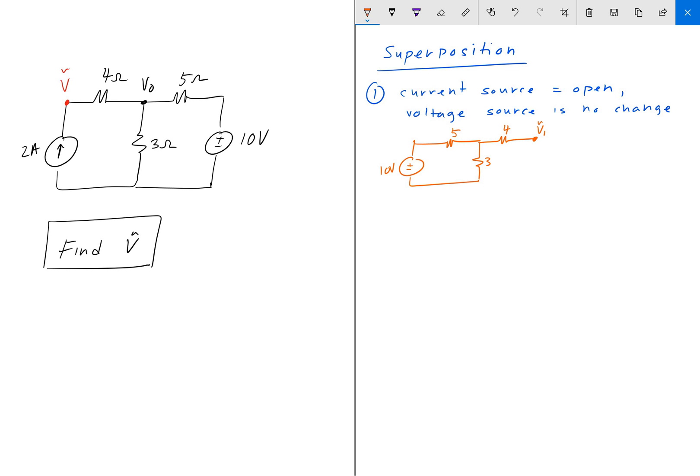And because there is nothing connected to the end of this 4 ohm resistor, V tilde 1 is the same as V out. And so we're going to solve for V tilde 1. And that is just your simple voltage divider.